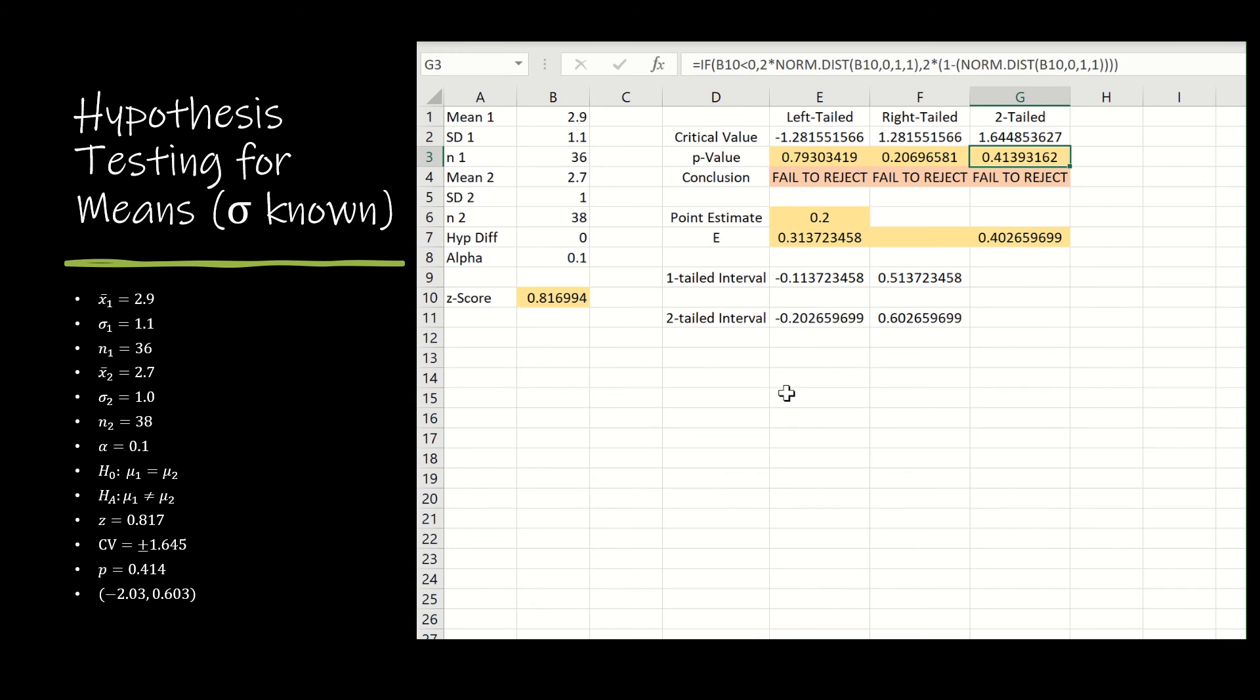If you've been watching the last videos, we also talked about how to just use the right-tailed value. So to use the absolute value to make the z-score positive, find the area to the right and double it.